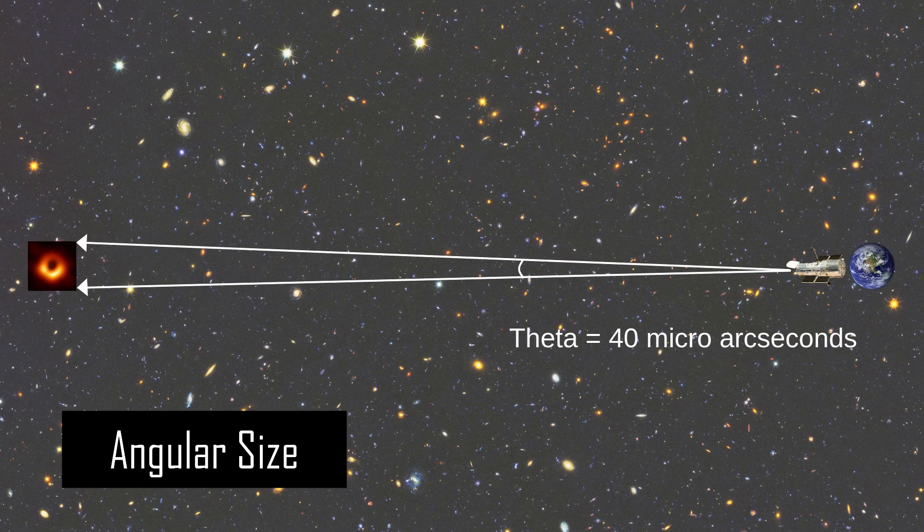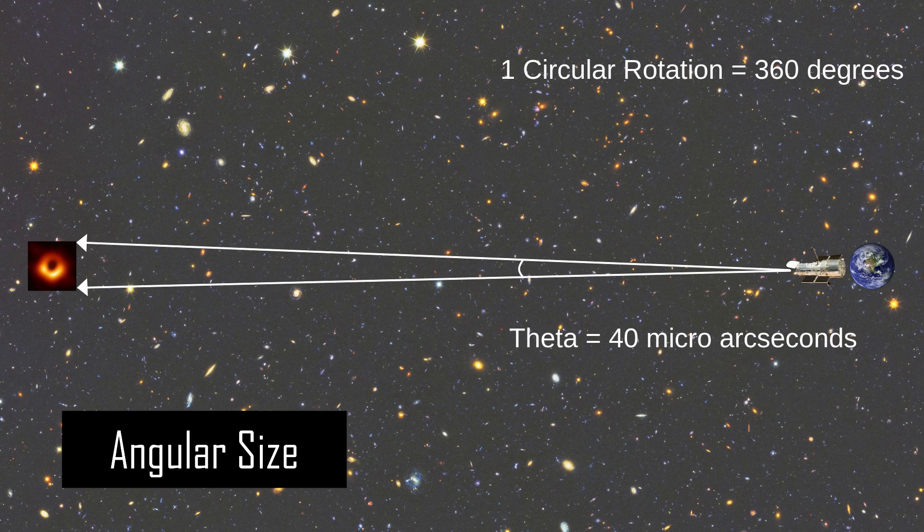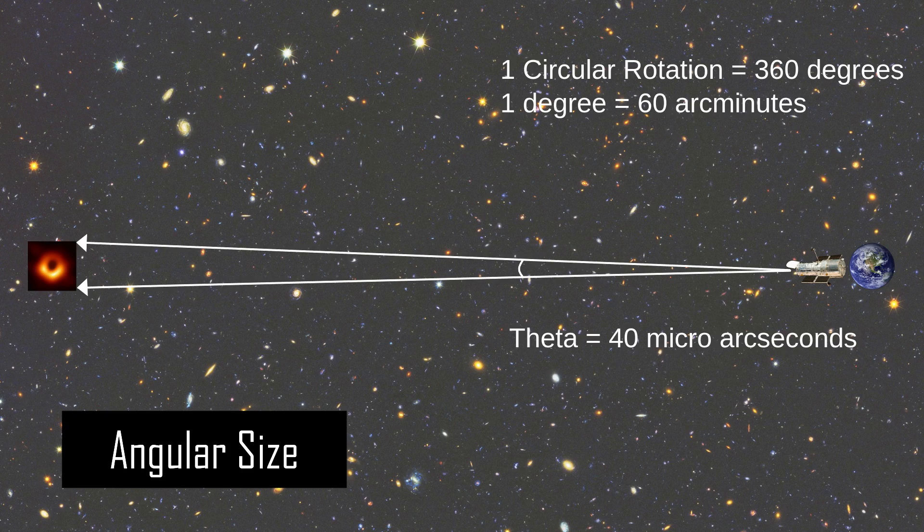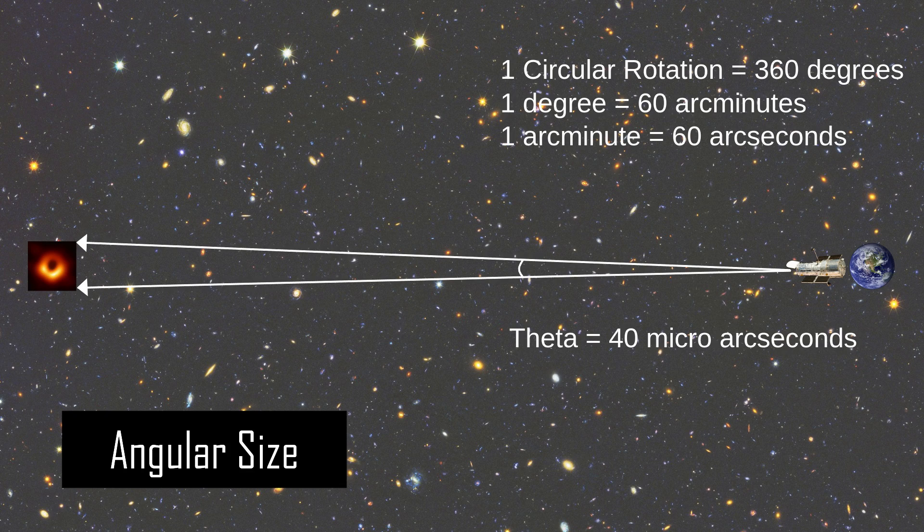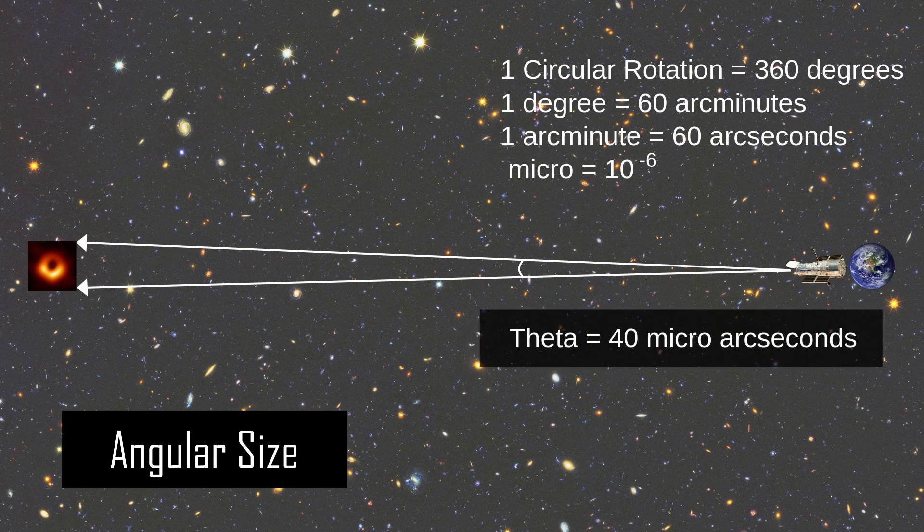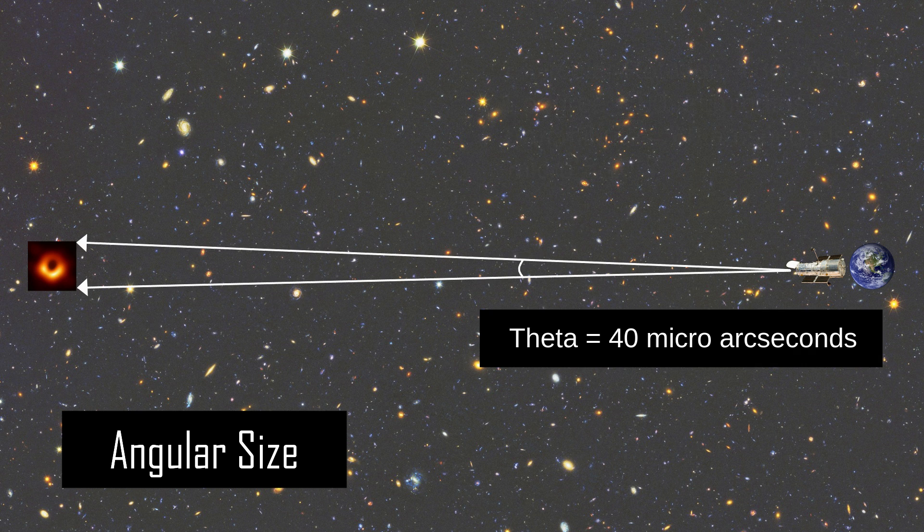To appreciate this, imagine one circular rotation which has an angular size of 360 degrees. Now one degree has 60 arc minutes, and one minute has 60 arc seconds. So 40 micro arc seconds means 40 multiplied by 10 to the power minus 6 arc seconds. That is extremely small. Objects that have such small angular sizes are very difficult to resolve.